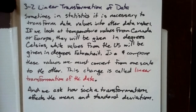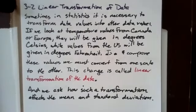If we look at temperature from Canada or Europe, they will be given in degrees Celsius, while values from the US will be given in degrees Fahrenheit. To compare these values we must convert from one scale to the other. This change is called linear transformation of data, and we ask how such a transformation affects the mean and standard deviation.